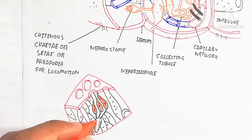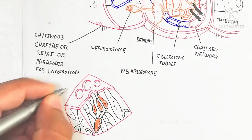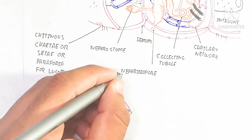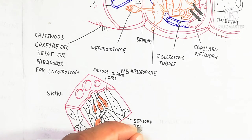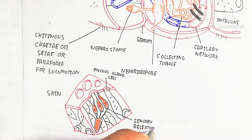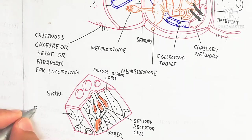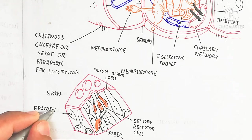Chaetae or parapodia are used for locomotion, surrounding the whole organism. The skin contains pores used for mucus excretion, with mucus gland cells present inside. A cuticle is on the upper side and sensory receptor cells detect light — movement toward light is phototactic movement, while movement due to chemicals is chemotactic movement, which can be positive or negative depending on the situation.